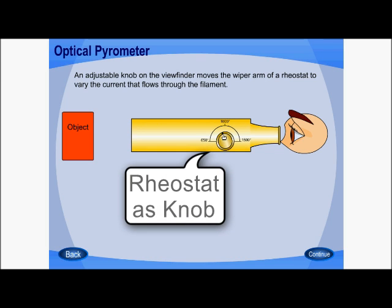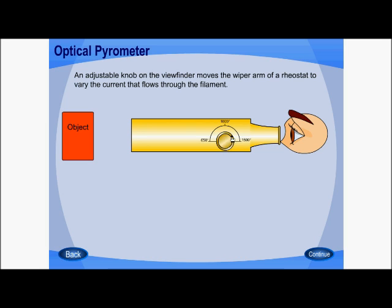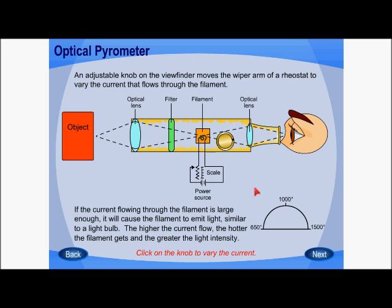Here there is a knob, as you can see. By varying the knob, we can vary the current passing through the filament. When we move this knob towards the right-hand side, the current to the filament also increases.